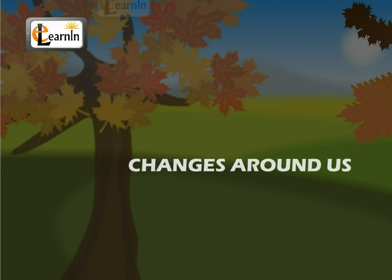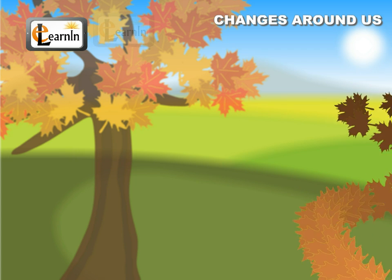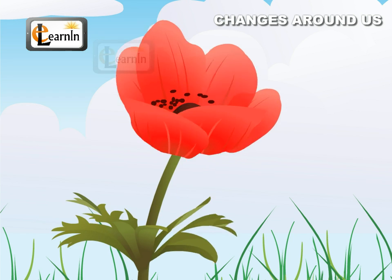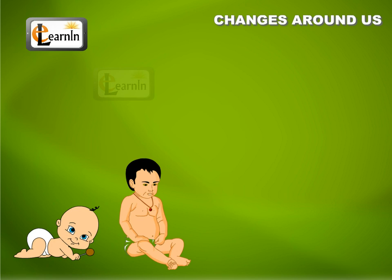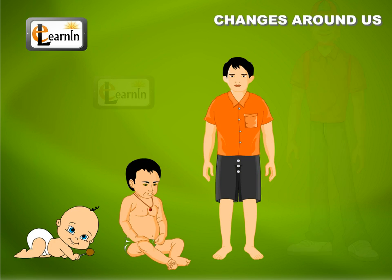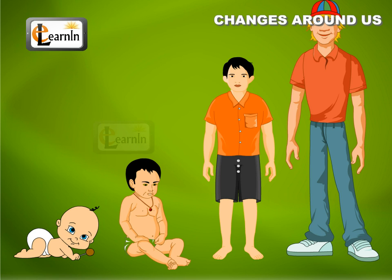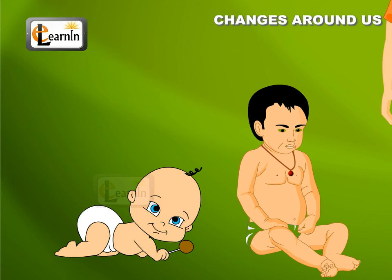Changes around us. We see a lot of changes, from leaves falling off trees to the blossoming of flowers. Our human body also undergoes a lot of changes, like a child growing into a full-grown adult. These are natural changes and they cannot be reversed. For example, an adult cannot become a child again.